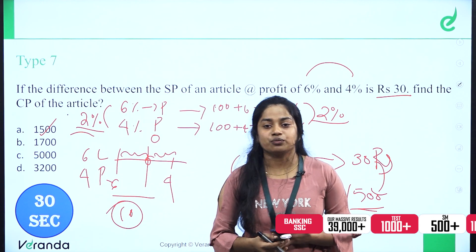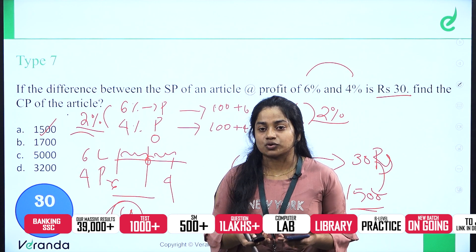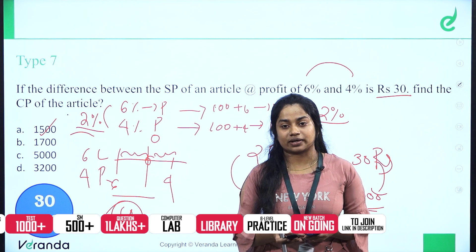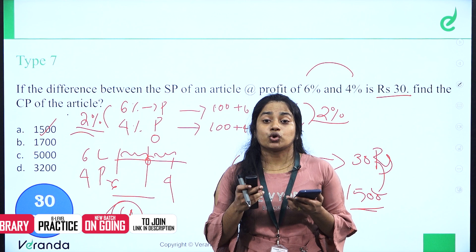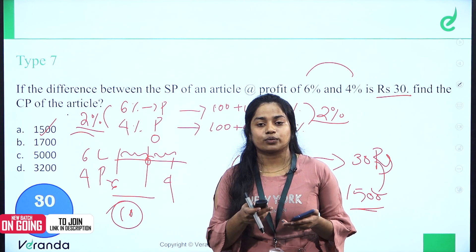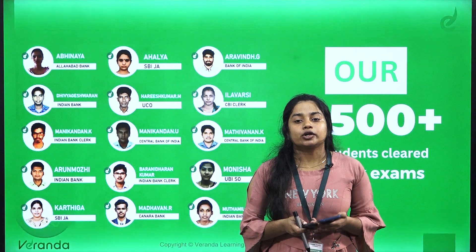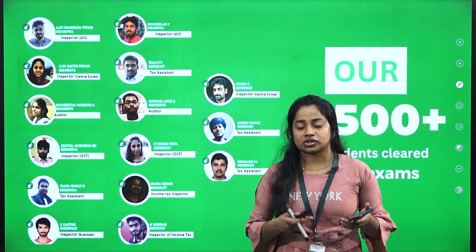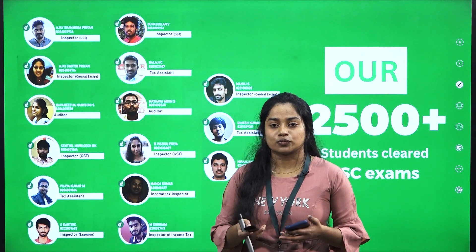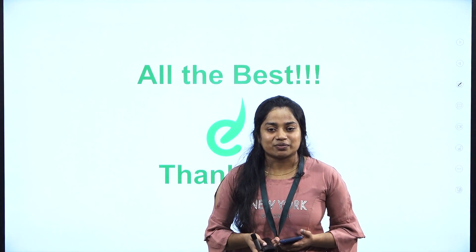So now we have covered 3 important types. If you have any questions, don't hesitate to ask. We also covered concepts related to ratio, proportion, and percentage. The ratio and proportion concepts are clearly connected to profit and loss. Have a nice day!